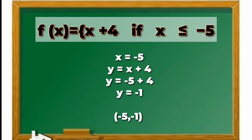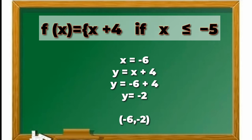Always remember that x always comes first before y. x is our domain and y is our range. Second possible value of x: x equals negative 6. y equals x plus 4, so y equals negative 6 plus 4. We substitute x to negative 6. y equals negative 2. So our ordered pair is negative 6, which is the domain, and negative 2, which is the range.